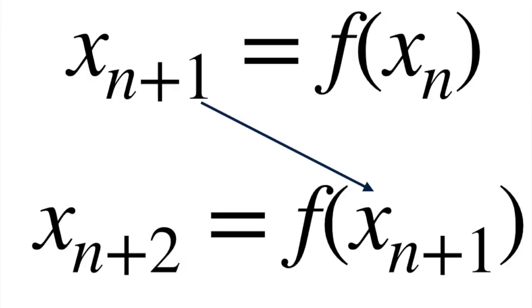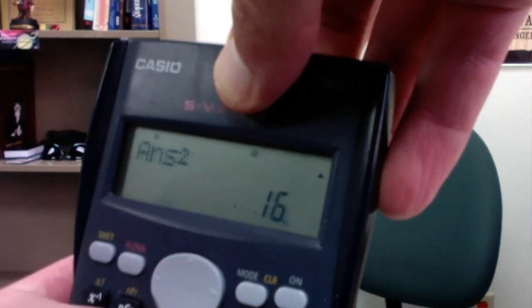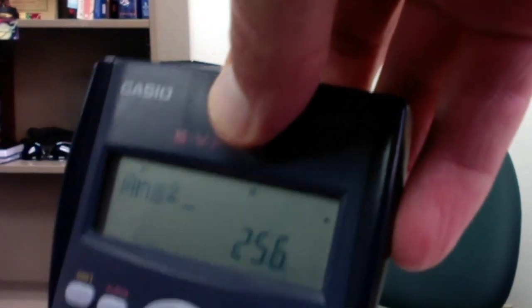We write an iterative map as x sub n plus 1 equals f of x sub n. This means that each iteration is built upon the previous one. For example, use your pocket calculator, pick a random number, and calculate its square, then the square of the previous result, and so on. That's an example.